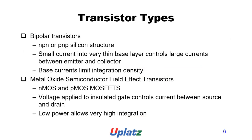Metal oxide semiconductor field effect transistors — NMOS and PMOS MOSFETs — use a voltage applied to an insulated gate to control current between source and drain. Low power allows very high integration.